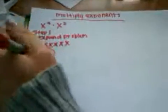Okay, now, an easier way to do this is say we have the problem x to the sixth times x to the fifth.